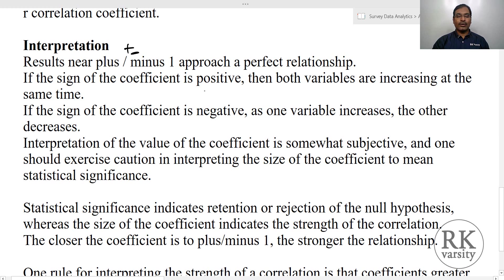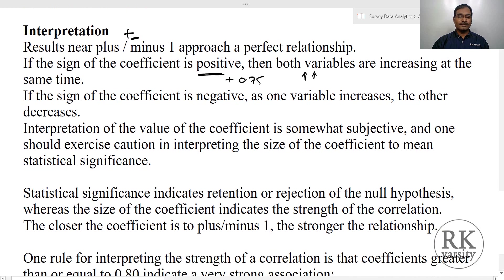If the sign of the coefficient is positive — for example, a positive value of 0.75 — then both variables are increasing at the same time, meaning they are moving in the same direction. If the coefficient is negative — for example, a negative value of 0.60 — then as one variable increases, the other decreases, meaning the relationship is inverse, and we get a negative correlation.